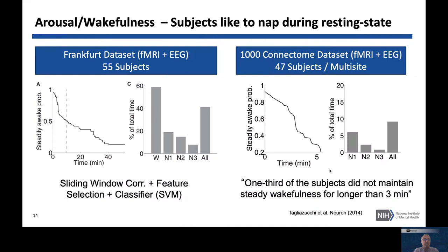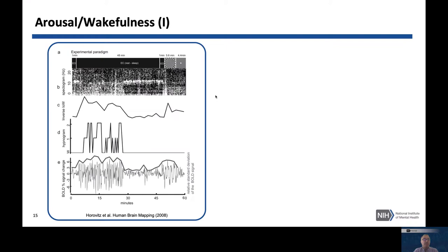One source we've been ignoring but are becoming more aware of is arousal and wakefulness. We put our subjects in the scanner and ask them to remain awake, but studies show that after around two to three minutes, a substantial percentage will fall asleep — and the longer the scan, the more likely subjects fall asleep. This is important because the resting state fMRI signal characteristics differ dramatically between awake and sleeping subjects.